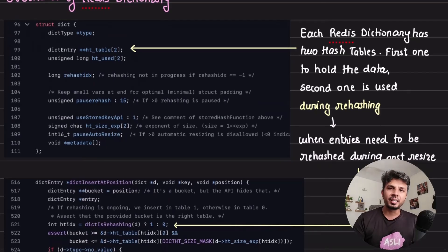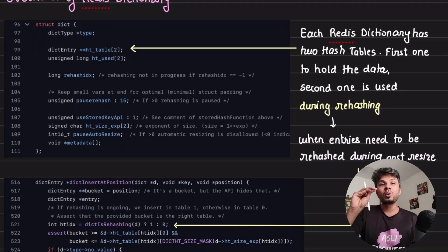Every dictionary in Redis is not just one hash table, it constitutes two hash tables. One hash table is used in regular state while the other hash table is used when the hash table is undergoing rehashing.